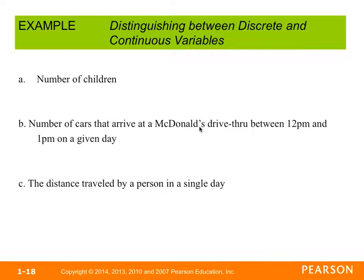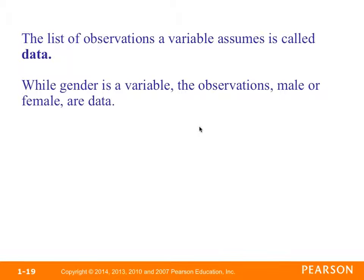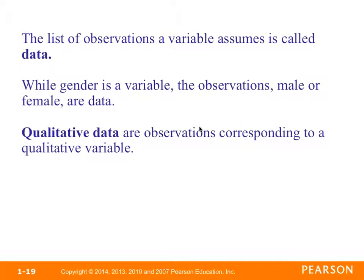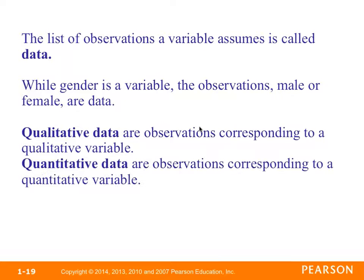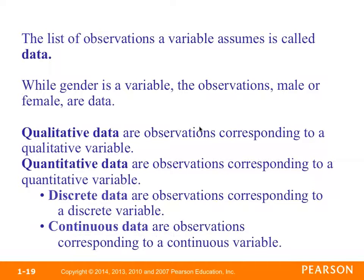For example, number of children is discrete — you can count 0, 1, 2, 3 and so on. The number of cars arriving at a McDonald's drive-through between 12 p.m. and 1 p.m. can vary a lot, but you can still count them, so it's discrete. The distance traveled by a person in a single day is continuous because we could measure it in miles or feet to any desired level of accuracy. The list of observations a variable assumes is called data. Qualitative data correspond to qualitative variables; quantitative data correspond to quantitative variables; discrete data to discrete variables; and continuous data to continuous variables.